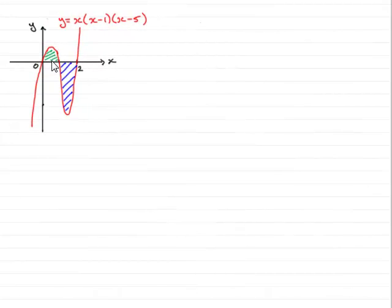Now in this question, we're asked to find this shaded area, the area bounded by the curve y equals x bracket x minus 1, x minus 5. The area bounded by the curve and the x-axis between x equals 0 and x equals 2. And you can see that the curve crosses the x-axis at x equals 1. So how are we going to do this?